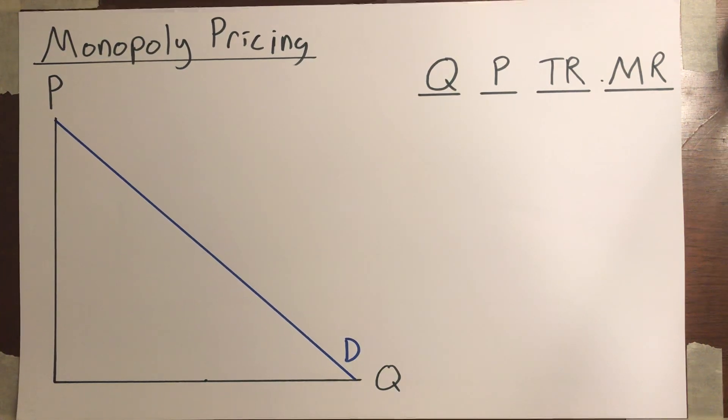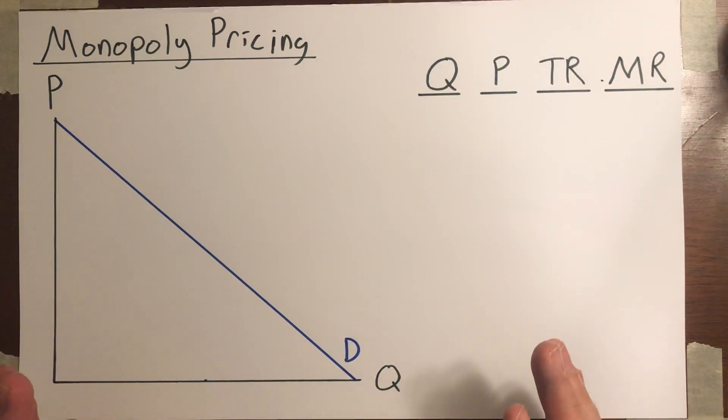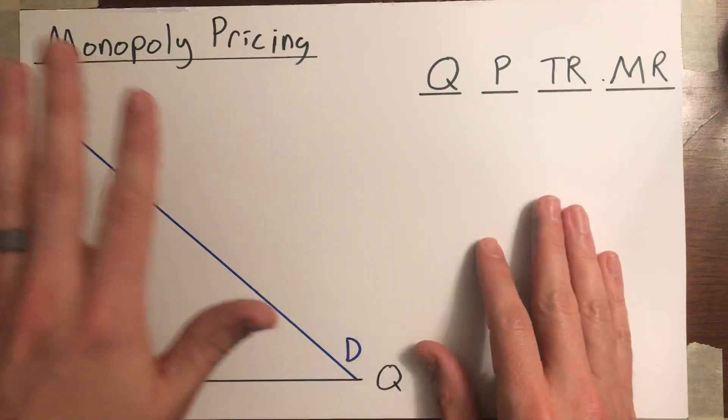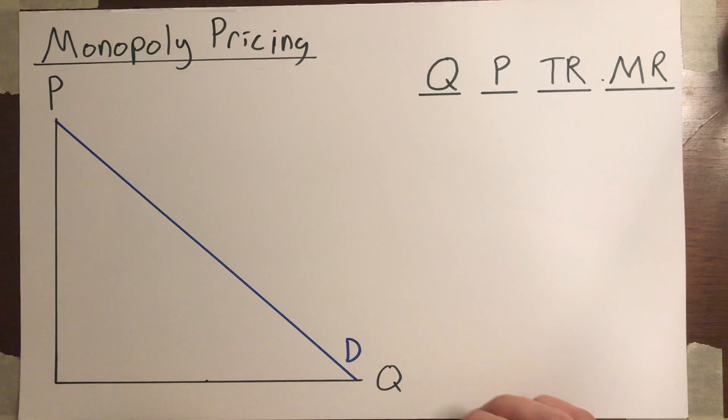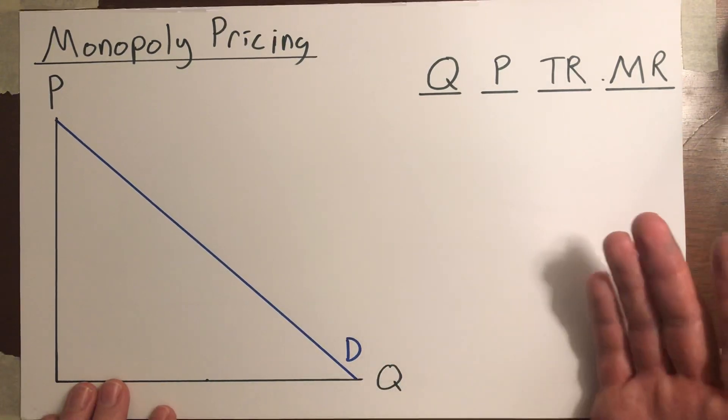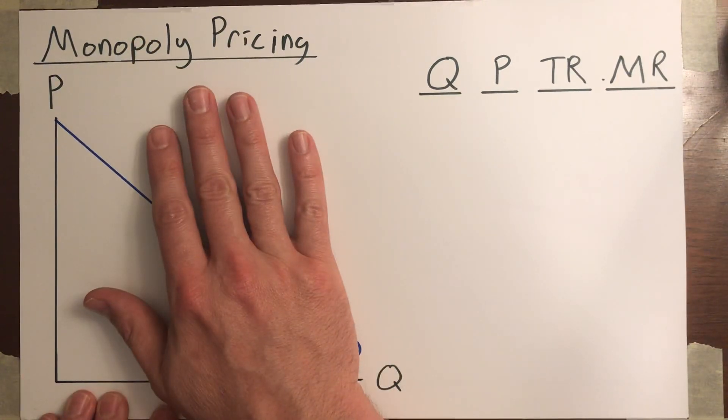All right, now let's discuss the monopoly model or the model of monopoly pricing. Remember, with the perfectly competitive market, we had to split it between two views: the market view and the firm view. But when there's a monopoly, it's the only firm in the market, so the market view is the only one we need to worry about.